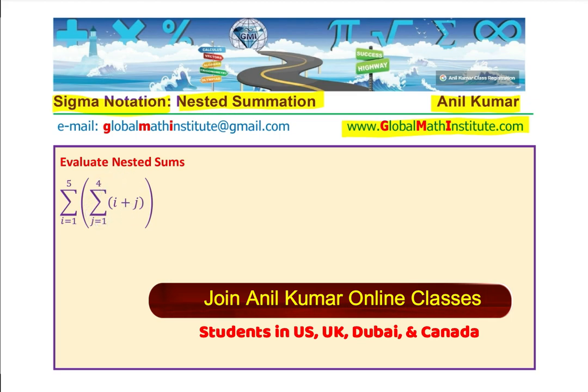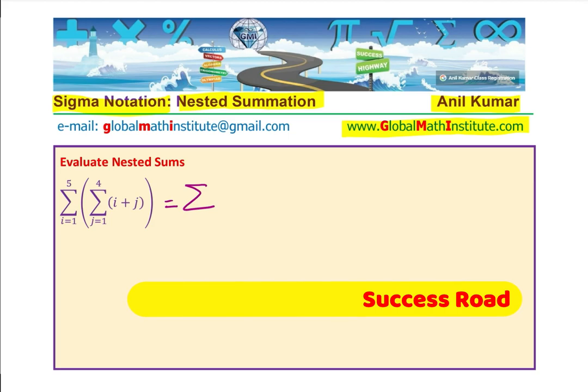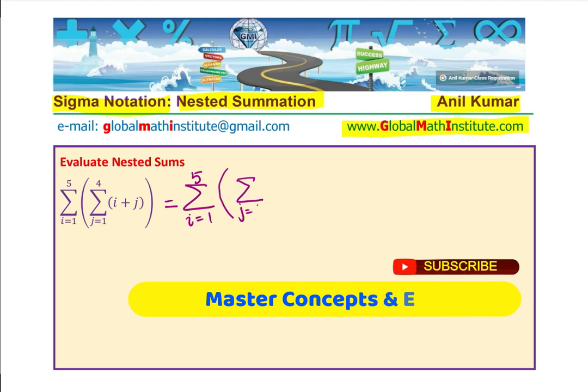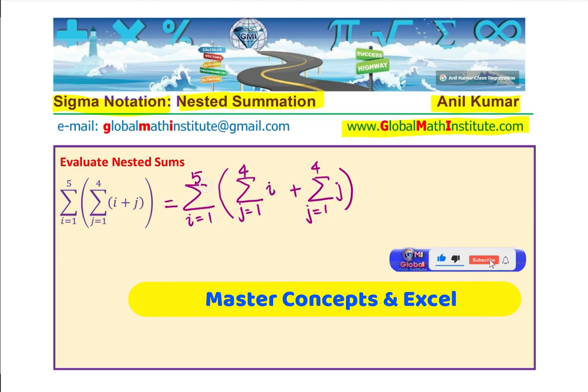So we can rewrite this as equal to sigma i from 1 to 5, and the inside operation is we have to do both on i plus j. So I could apply the properties and write this down as sigma of j from 1 to 4 of i plus sigma of j from 1 to 4 of j.